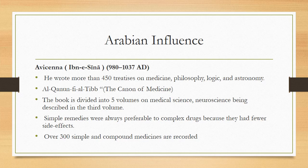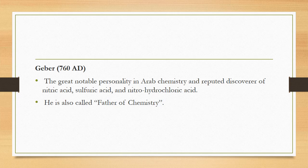Avicenna wrote more than 450 documents or treatises on medicine, philosophy, logic, and astronomy. His famous book is Al-Qanun Fi Al-Tibb, divided into five volumes, with medical science and neuroscience described in the third volume. He believed simple drugs were always preferable to complex drugs because they had fewer side effects, and over 300 simple and compound medicines are recorded. Geber is a great personality in Arab chemistry and the reputed discoverer of nitric acid, sulfuric acid, and nitrohydrochloric acid — he is also called the father of chemistry.